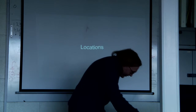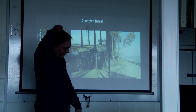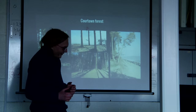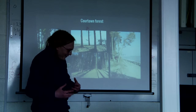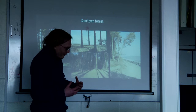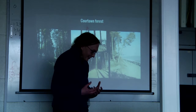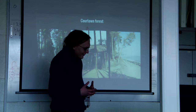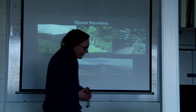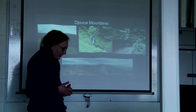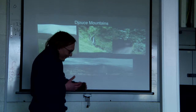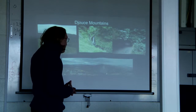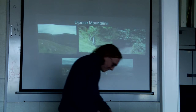Locations: I'm planning to shoot in two places. Corktown Forest — because it's beside the sea and it brings a bit of magic to the story, since there's not really a lot of forest beside the sea, and I think that's really special. And then the Juice Mountains, where there's a forest that looks more like somewhere a child could get lost — it's more feral and wild-looking than Corktown.